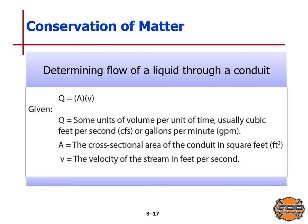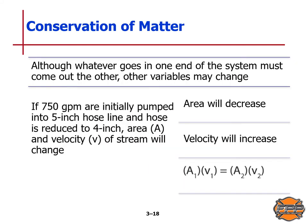Flow of liquid through a conduit is determined by Q equals A times V, where Q is volume per unit of time (usually cubic feet per second or gallons per minute), A is the cross-sectional area of the conduit in square feet, and V is velocity in feet per second. Although whatever goes in one end must come out the other, other variables may change. If 750 gallons per minute are pumped into a 5-inch hose line reduced to 4-inch, area A decreases but velocity V increases.